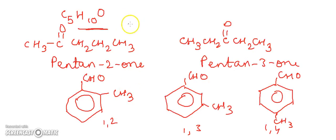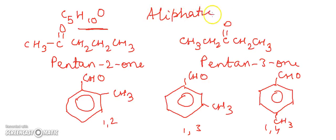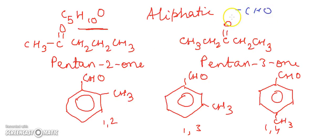A very striking point here is that aliphatic aldehydes do not show position isomerism. This is because the aldehyde group CHO is always present at the end of the carbon chain.